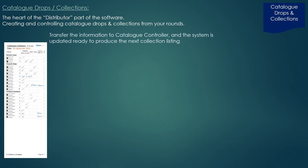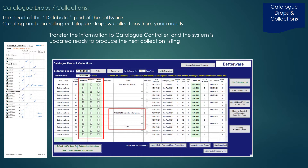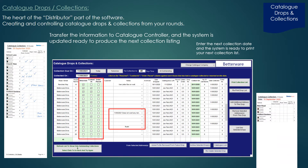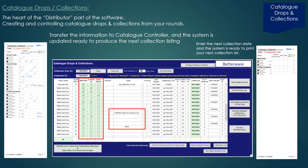Once we have finished collecting our catalogues, we can enter our results back into the system, indicating which catalogues were returned, which were looked at, and which had orders placed against them. We can then tell the system the date we're going to go back and try to retrieve the catalogues we were unable to collect, and the system will print a new collection list on that given date.